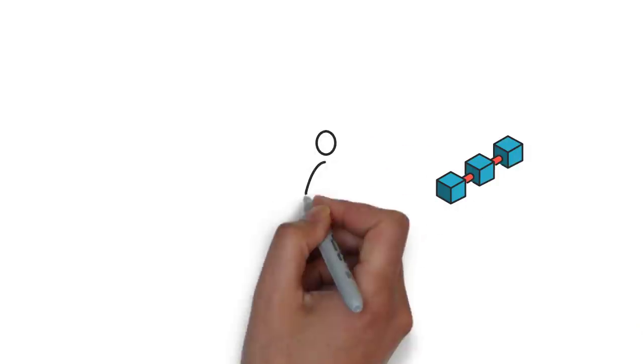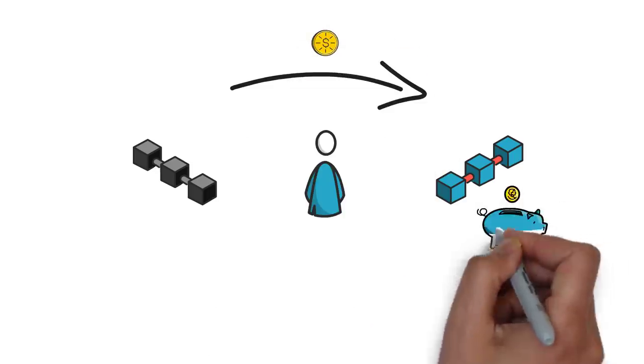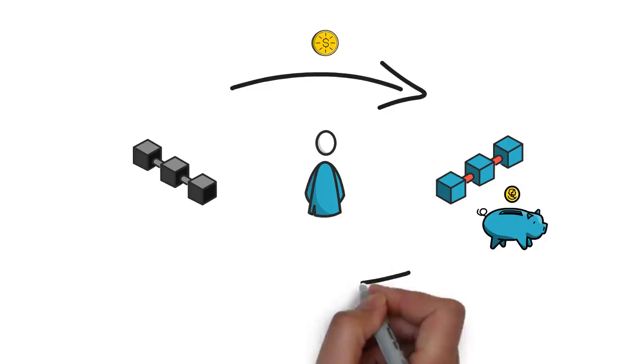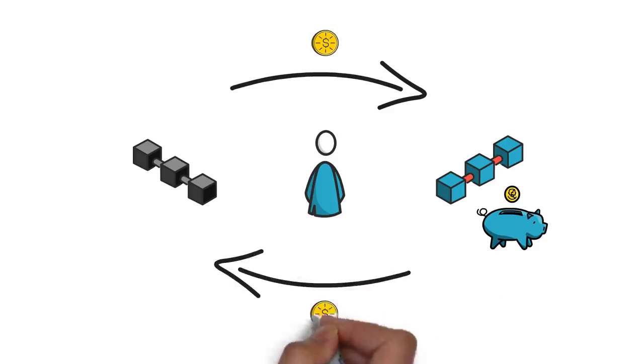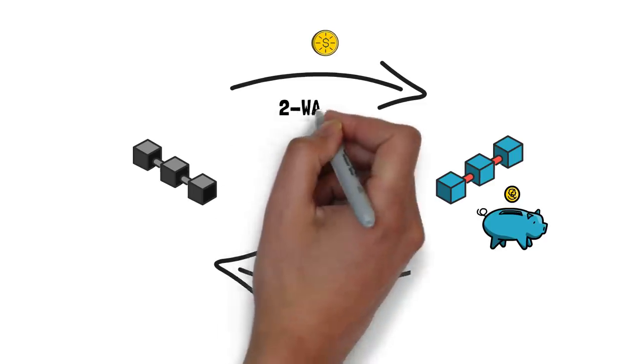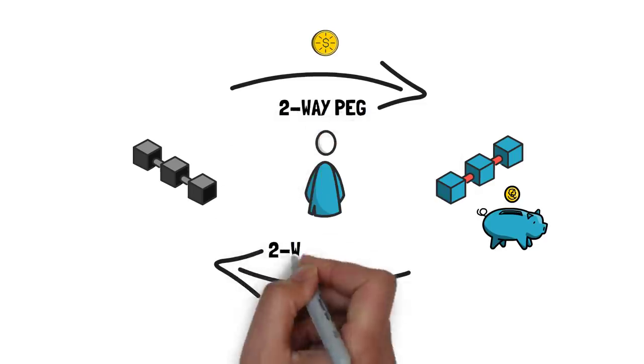Sidechains allow users to send their tokens from the main chain and receive them on the sidechain. Once the funds are transferred to the sidechain, they can be used within the sidechain ecosystem. Similarly, users can withdraw their tokens from a sidechain back to the main chain. The whole process is called a two-way peg or a two-way bridge.